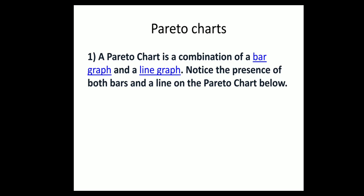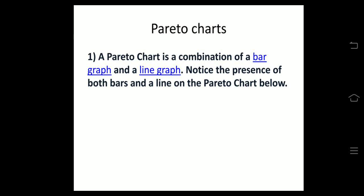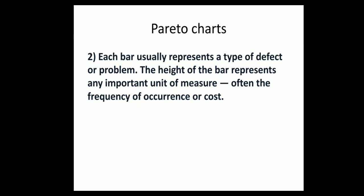A pareto chart is a combination of bar graph and a line graph. Notice the presence of both bars and a line on the pareto chart below. Each bar usually represents a type of defect or problem. The height of the bar represents any important unit of measure, often the frequency of occurrence or cost.